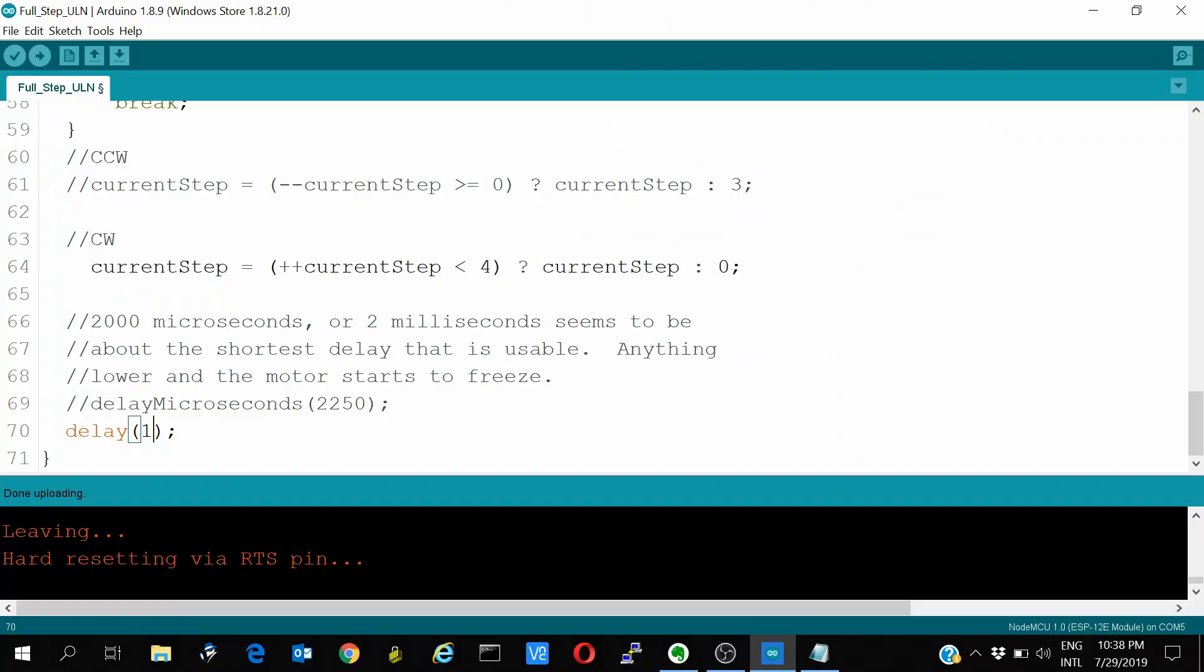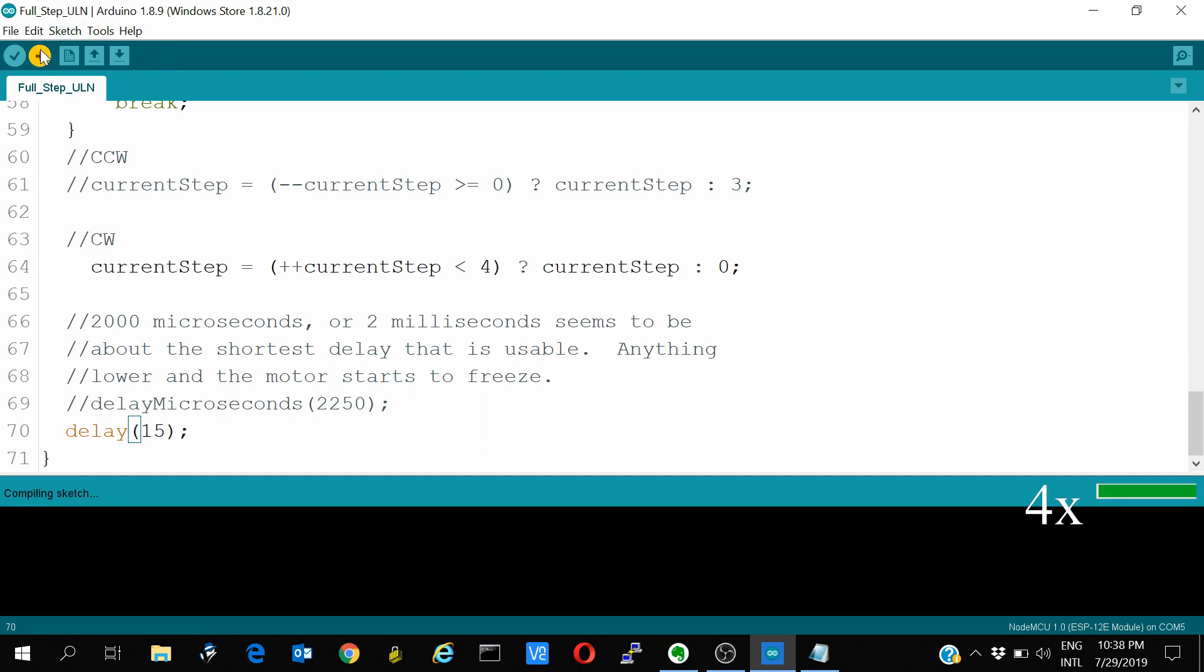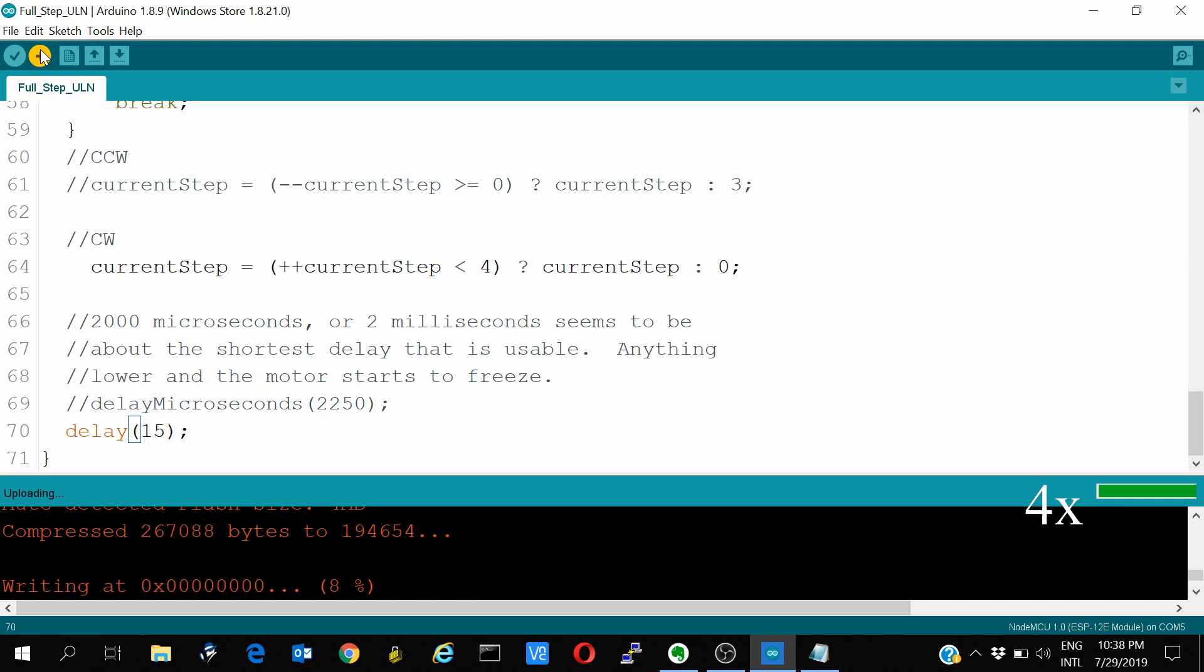Now let's load the code with 15ms step delay and see the torque. Few other things to note is that the motor does not work at 1ms delay. So the maximum speed of the motor is at 2ms delay.